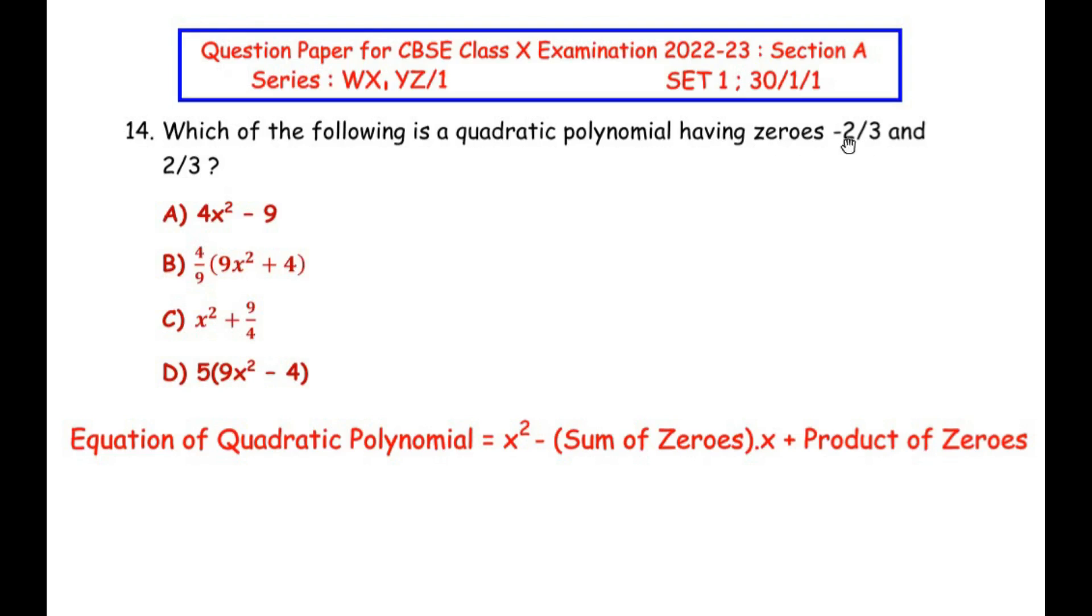And here we can see that there are two zeros given, that is -2/3 and 2/3. So let us begin by finding the sum of zeros and product of zeros.